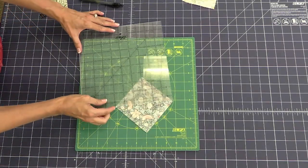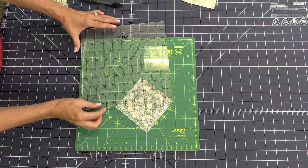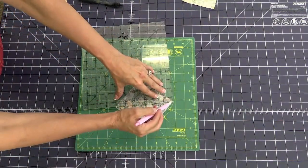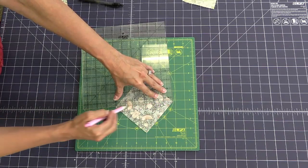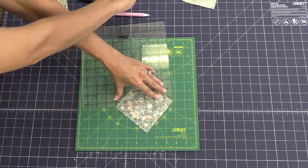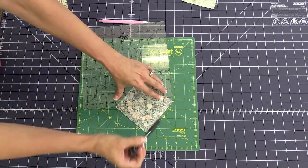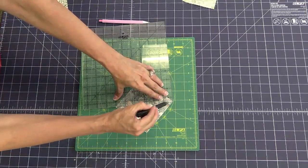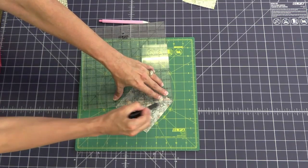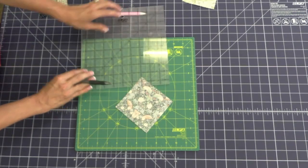So you can use your chalk pencil or your marking pencil, whatever you've got, and you're just going to mark a line. And it's harder to see this one on film, so I'm just going to use a regular marker just so we can see what that looks like.